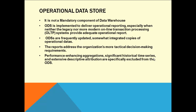The operational data store will have the history about the transaction, but not the history about the customer itself or the dimension itself. If a customer moved from one place to another and you wanted to see both addresses, an operational data store cannot answer that. But a data warehouse will be able to answer, because you maintain the customer address in a Type 2 slowly changing dimension format.